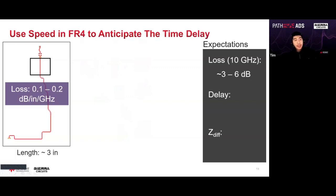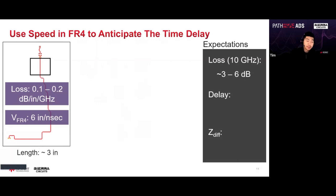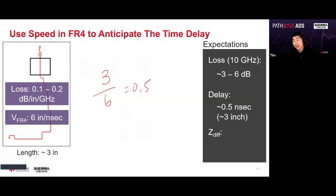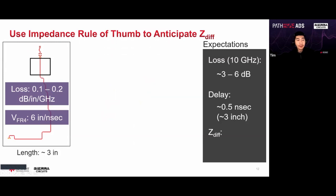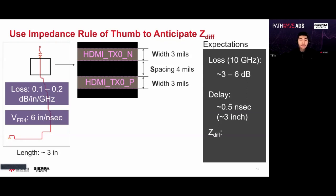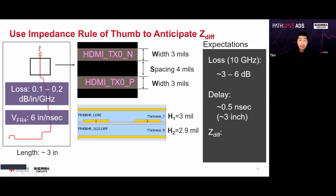The second thing is to find the time delay by using the propagation speed metric of 6 inches per nanosecond. The length is 3 inches divided by 6, which is about half a nanosecond — the delay is about 0.5 ns. For impedance, I'll give you a clue: looking at the HDMI traces, the width is 3 mils and the spacing is 4 mils. The stackup has a height of 3 mils on top and 2.9 mils at the bottom. What do you think the differential impedance would be?